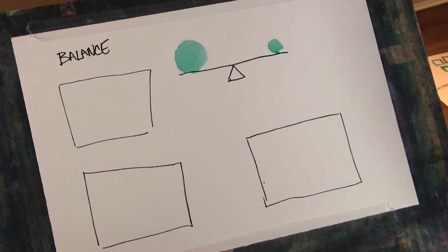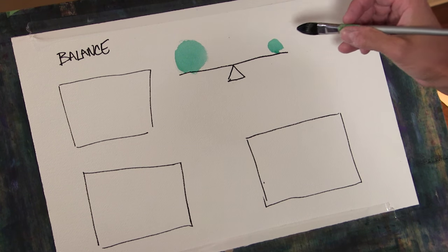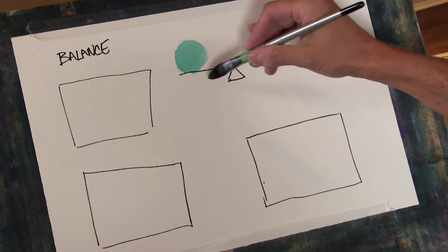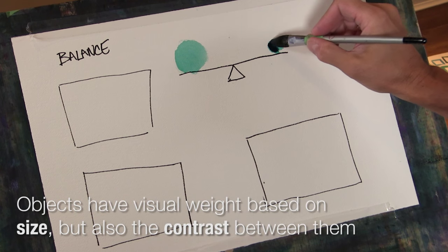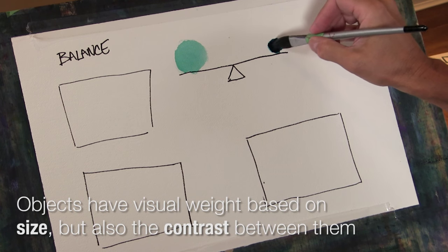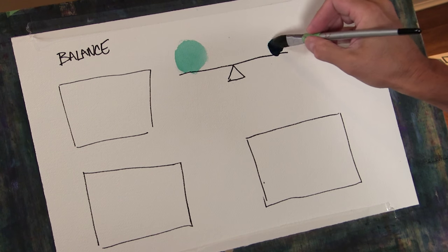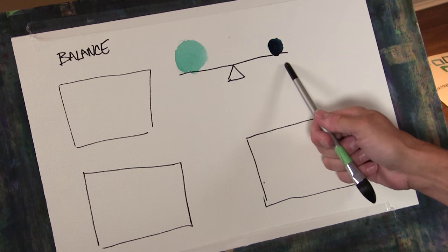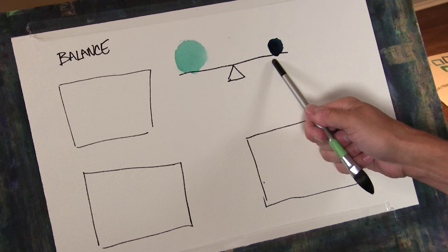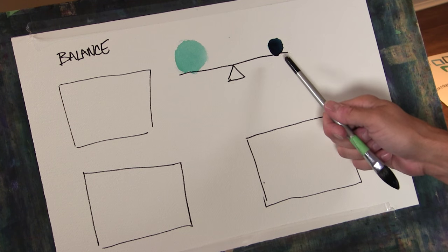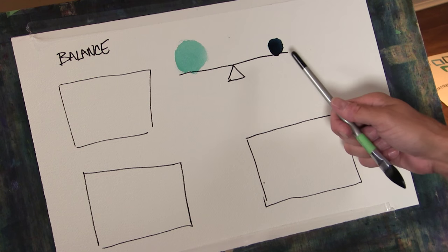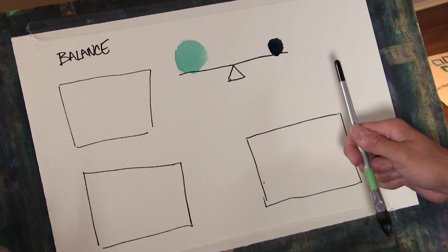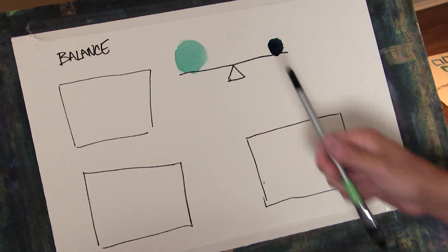We can balance it by making the shapes equal but then that gets very boring. Another way that we can balance it is - objects have a visual weight based on their size but also based on the contrast that defines them. So if we come in here with a really dark value, even though this shape is much smaller, because the contrast in its value is so much more, then that kind of evens out that push and pull of one shape to the other.